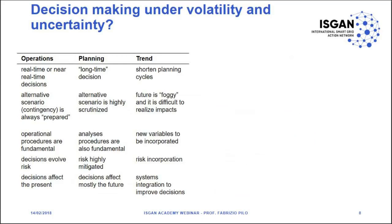Decision making is a pretty hard job. We can split it into operation and planning. We were used to having long-time decisions in planning and real-time or near-real-time decisions in operation, but now the trend is to shorten that cycle — this is particularly important in planning. Another point is how to generate different alternatives and scenarios. We are facing a much more uncertain situation, so the future is really foggy, and it is very difficult to assess the impact of our decisions.